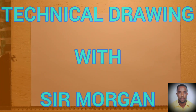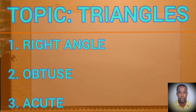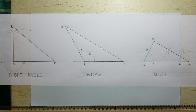Greetings again everyone. Sir Morgan here from the technical department. Today we will be looking at triangles. We will be looking at the right angle triangle, the obtuse triangle, and the acute triangle. I will now go ahead and border my paper.